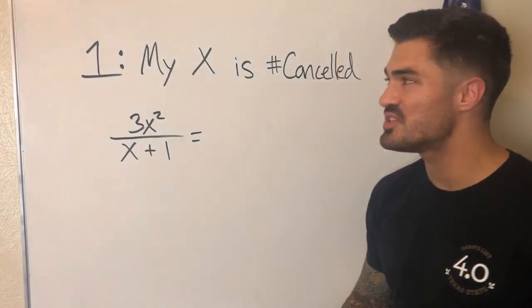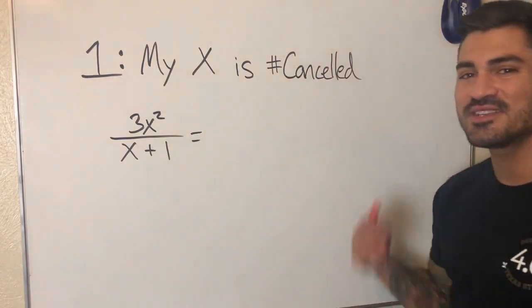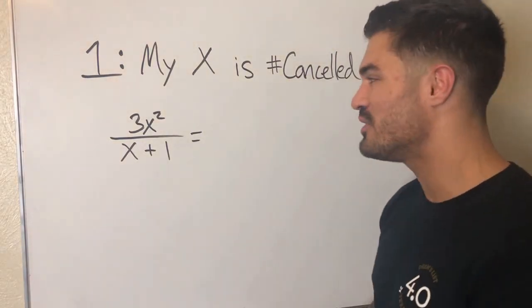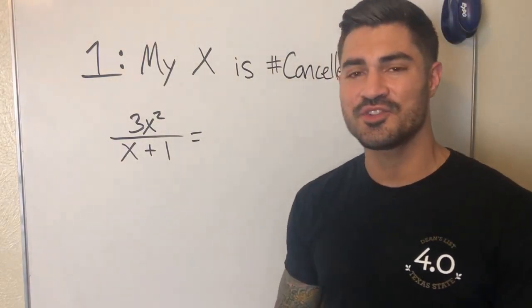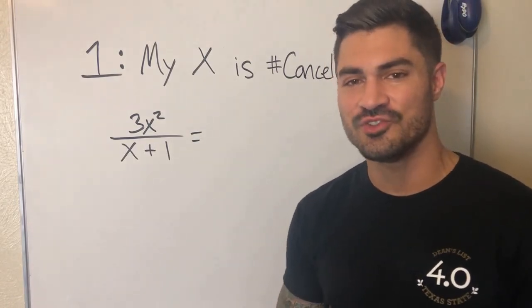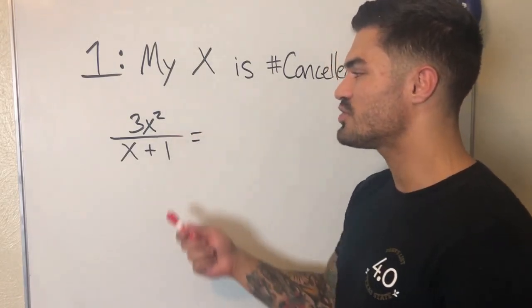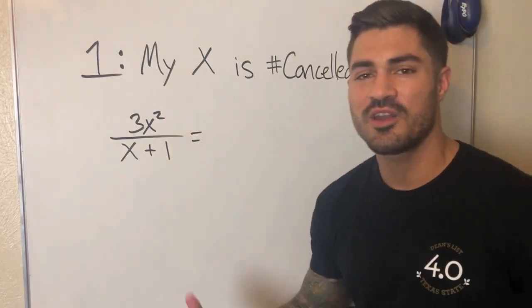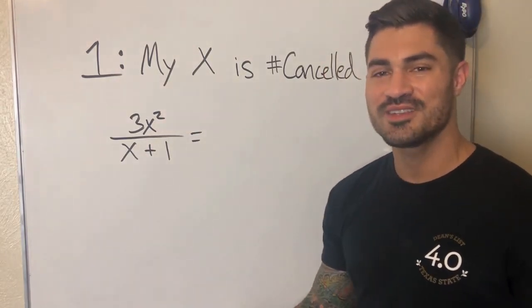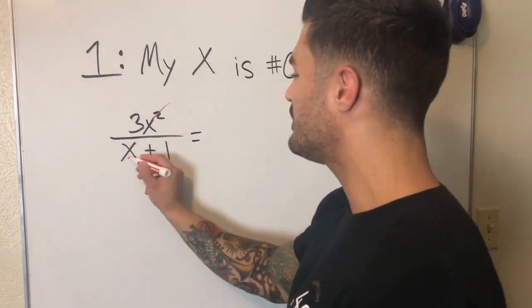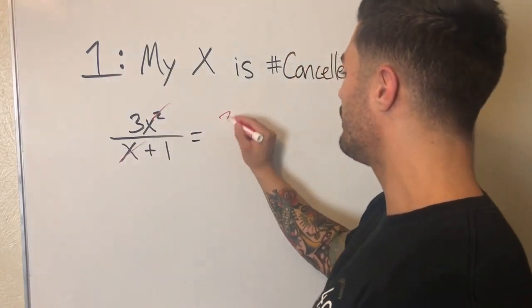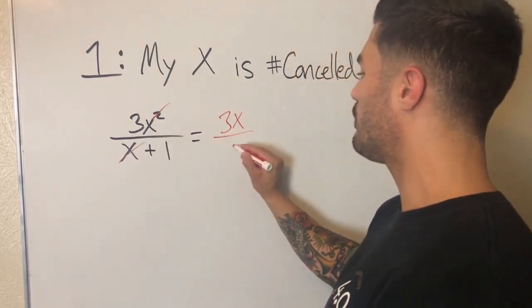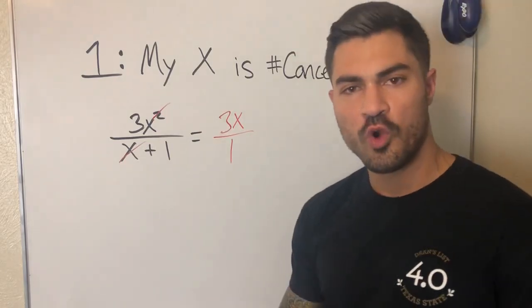So I hope you enjoy this video. Alright, so here's our first big mistake and I like to call this one 'My X is #Canceled.' And here's why: because students love to cancel their X's even though sometimes they shouldn't. So let's look at this example: 3X² over X+1. I got two X's in the top, I got X in the bottom, that means I can get rid of some X's right? Hallelujah, she gone! Bye Felicia, she gone! What am I left with here? 3X over 1, right? Wrong.